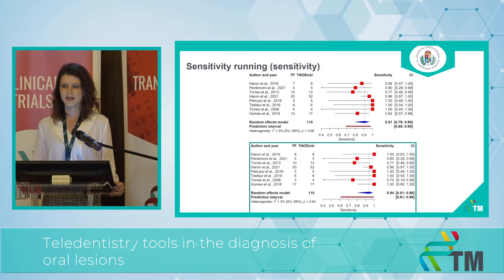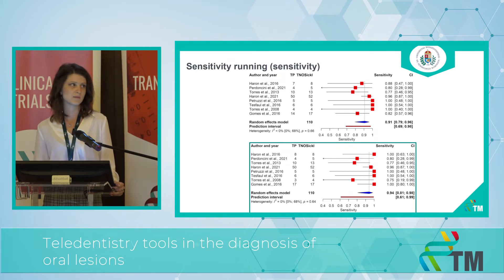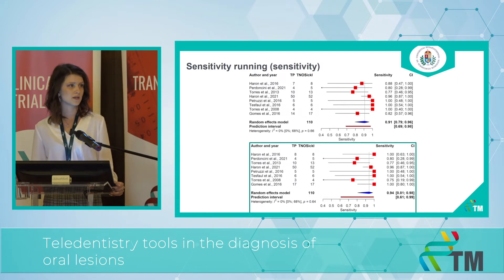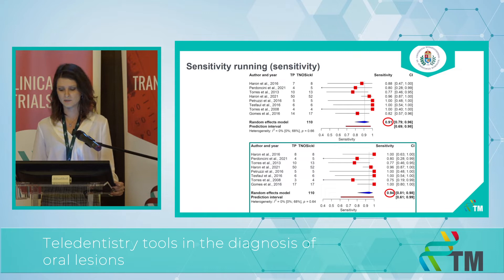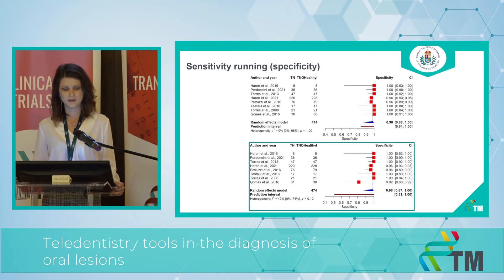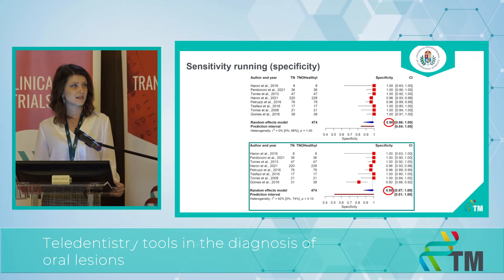There were several articles with more than one examiner. In those cases, we chose one randomly for the main analysis. However, the statistician made a sensitivity running analysis using the other examiner. In that case, we got a better sensitivity result of 0.94, while the specificity remained the same. This points to the fact that the result does not depend on the examiner itself, because it is quite stable.